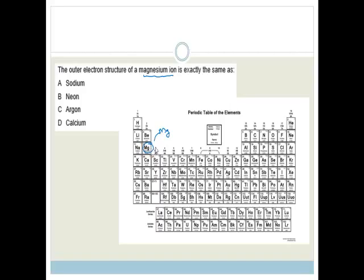When magnesium loses electrons, it most likely becomes Mg2+, meaning it has lost two electrons. The reason magnesium loses two electrons is so it can become noble — it can have the same outer electron structure as a noble gas. So it's not going to stop at sodium; it goes back to neon. Therefore the correct answer is B, which is neon.